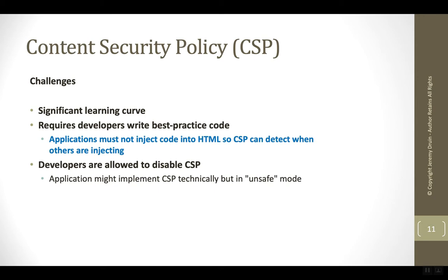It's technically possible for teams to implement the content security policy header but simply turn off CSP by allowing unsafe modes intended for backwards compatibility. A project might contain the CSP header technically speaking, but not actually implement content security policy. For some naive scanners that are simply looking to see if the header exists, this can be enough to sneak past those lower-fidelity scanners. A better scanner would actually look at the context of the policy and reason through whether or not unsafe directives are included.